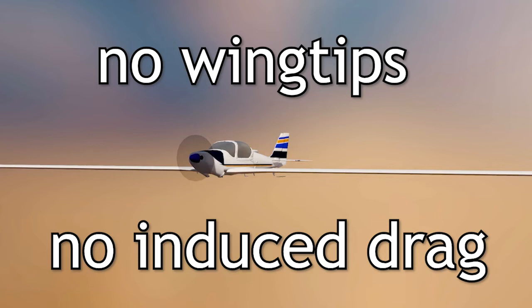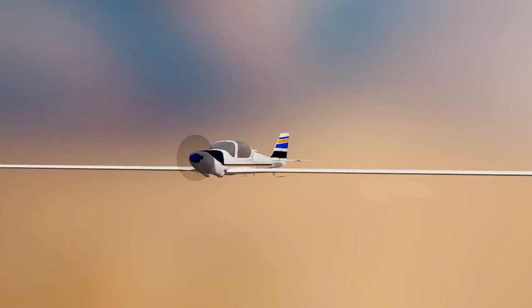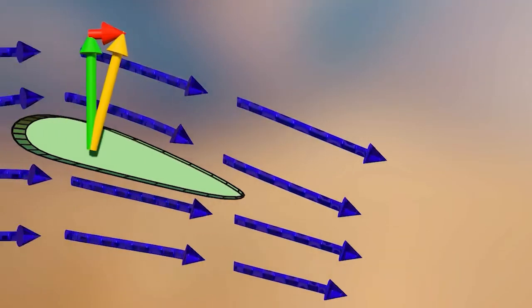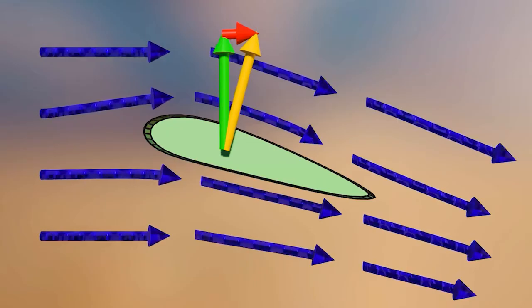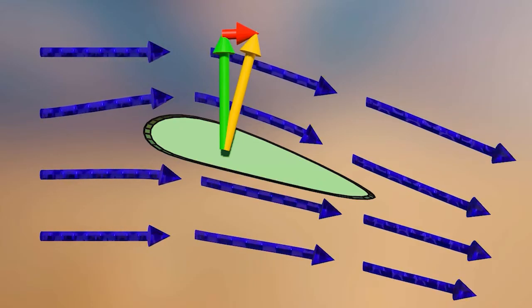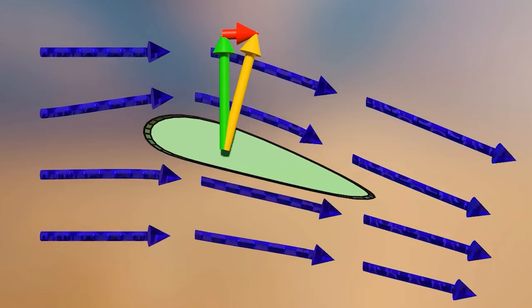Now in the real world, this happens in wind tunnels, but it never happens in free flying aircraft. When we account for the wingtips, we see that the lift is inclined back. We've already seen that this is the source of induced drag. But look at what happens as the lift vector rotates back. The vertical component of the lift shrinks.